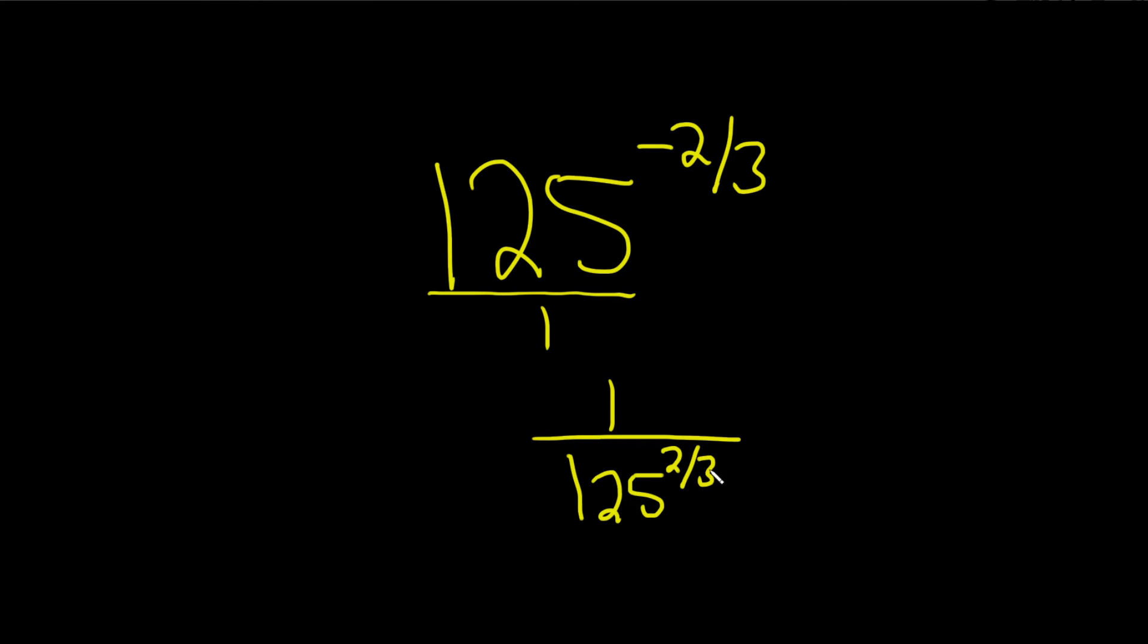Okay, so now we need to get rid of this fraction. So here's the trick. So the one stays here. And then this number here, the three, the number on the bottom, always goes in the little pocket like this. And then the 125 goes here. And then the two, well, I'll go ahead and put that outside like this.